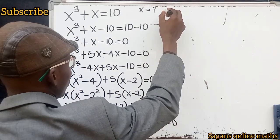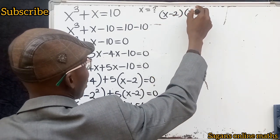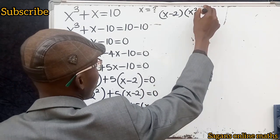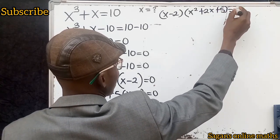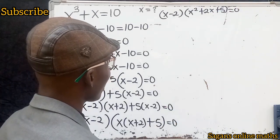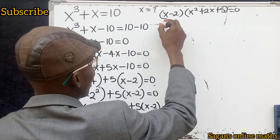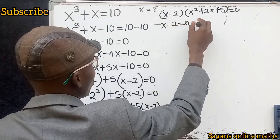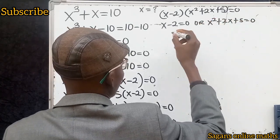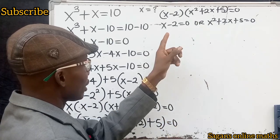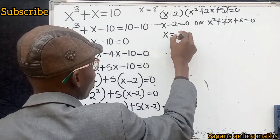Opening the parenthesis, this is x minus 2 into x squared plus 2x plus 5, equals 0. When the product of two terms equals 0, each factor equals 0. So x minus 2 equals 0, or x squared plus 2x plus 5 equals 0. From the linear factor, adding 2 to both sides gives x equals 2.